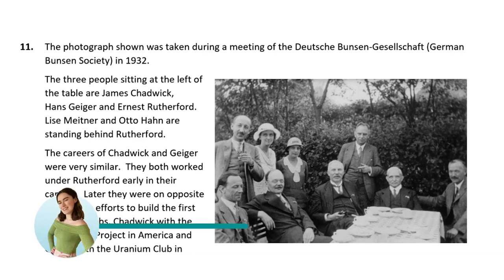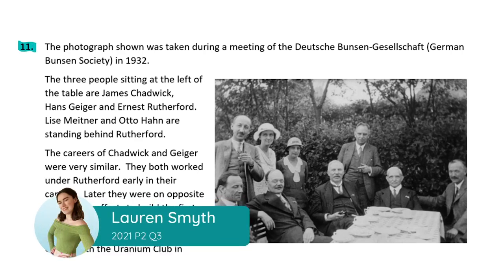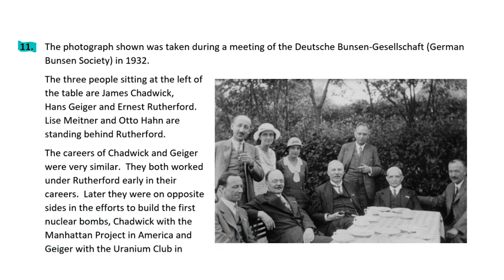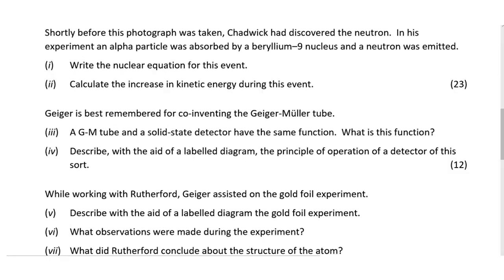Here is the first look at today's question, which is question 11. We're given a little bit of information about the people in the photograph to the right here and the significance they brought to modern physics. Down here we are told that Chadwick discovered the neutron, and in his experiment an alpha particle was absorbed by a beryllium-9 nucleus and a neutron was emitted. This information will help us answer part 1 and part 2.